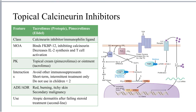The next set of drugs are all indicated for atopic dermatitis only when treatment with a steroid has failed. These include the topical calcineurin inhibitors, crisaborole or Eucrisa, and dupilumab or Dupixent, and I will go through each of these individually.